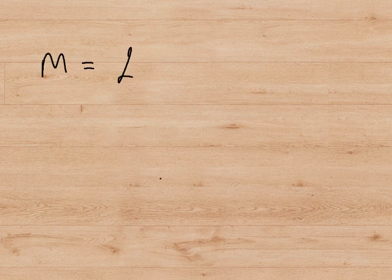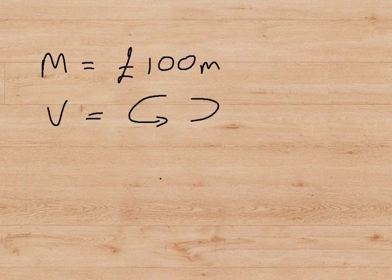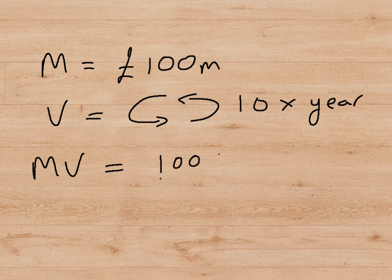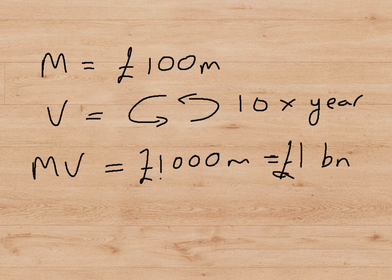Imagine the amount of money in the economy is £100 million. V is the velocity with which money is circulating — how fast is it going round? Let's assume it's going round ten times a year. So this £100 million is going round ten times a year. When we multiply M by V, we get £1,000 million — in other words, one billion pounds. So on the left hand side of the equation, we have one billion pounds.